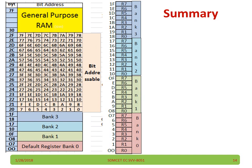And this is a summary. At the beginning we have bank 0, bank 1, bank 2, bank 3, followed by the bit-addressable area and then general purpose. Bank 0 contains R0 to R7, bank 1 contains R0 to R7, and up to bank 3 which also contains R0 to R7.